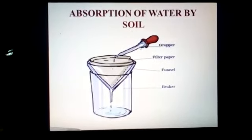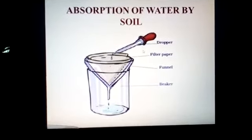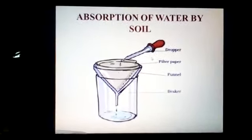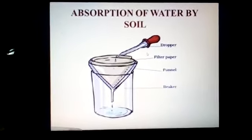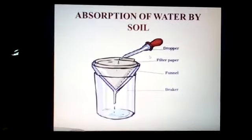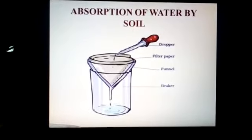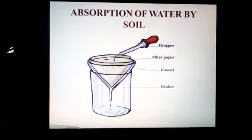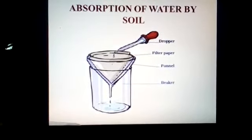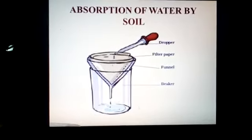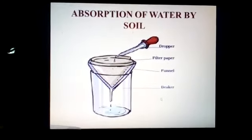Measure a certain amount of water in a measuring cylinder. Pour the water drop by drop onto the soil using a dropper, as shown in the figure. Pour water all over the soil. Keep pouring water until it starts dripping. You can see water starts dripping into the beaker — the funnel is fixed to a beaker.